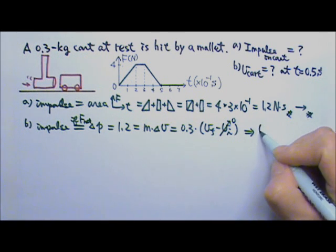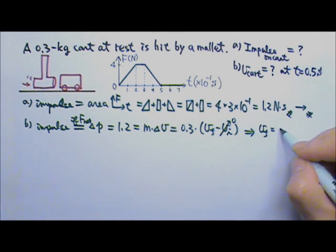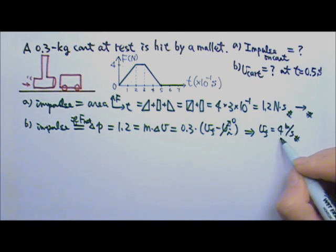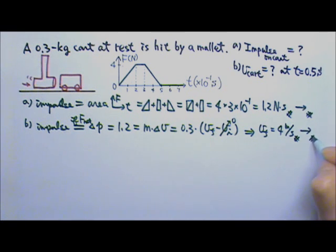So this gives us the final velocity is 4 meters per second. And this is positive just like the impulse, so the velocity goes to the right.